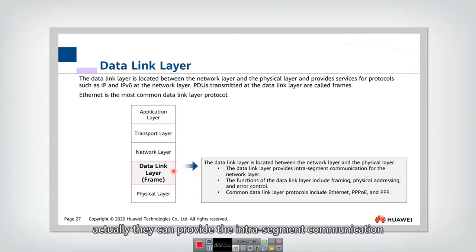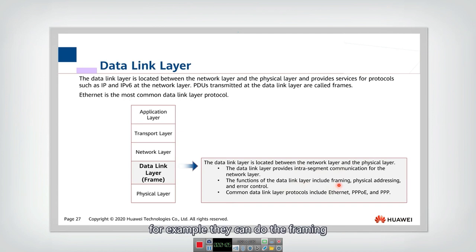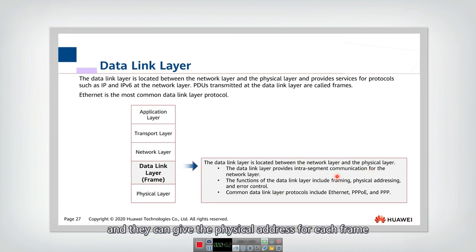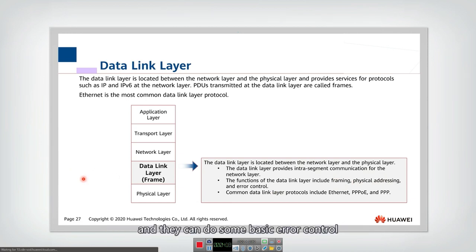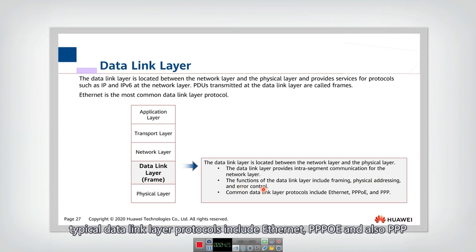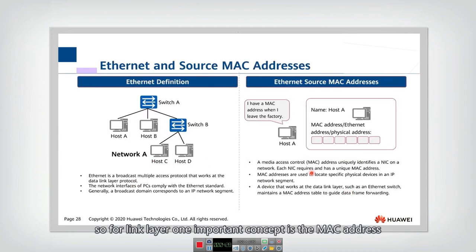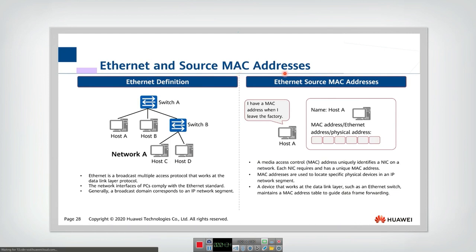What kind of service does the data link layer provide? They can provide intra-segment communication, and they can also perform framing — cutting a long packet into several small frames — and they can assign a physical address for each packet and do some basic error control. Typical data link layer protocols include Ethernet, PPPoE, and also PPP.